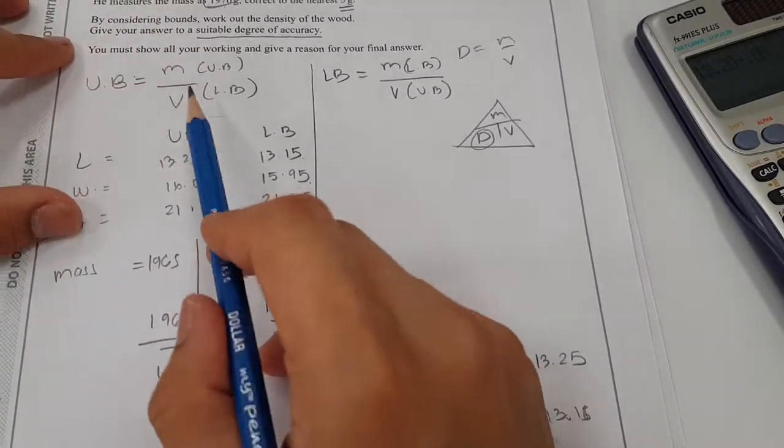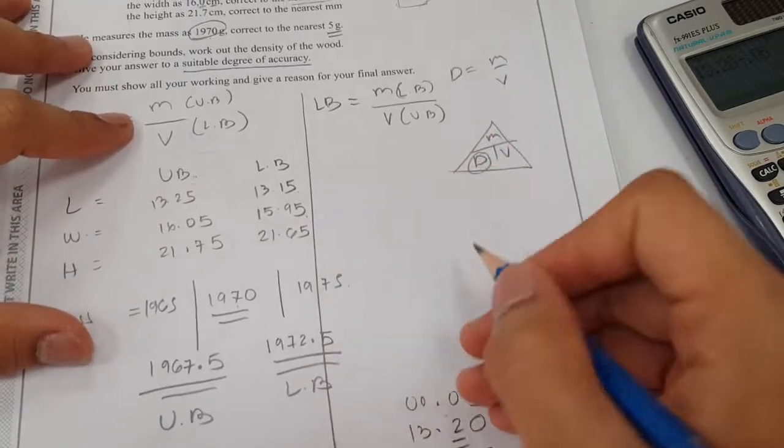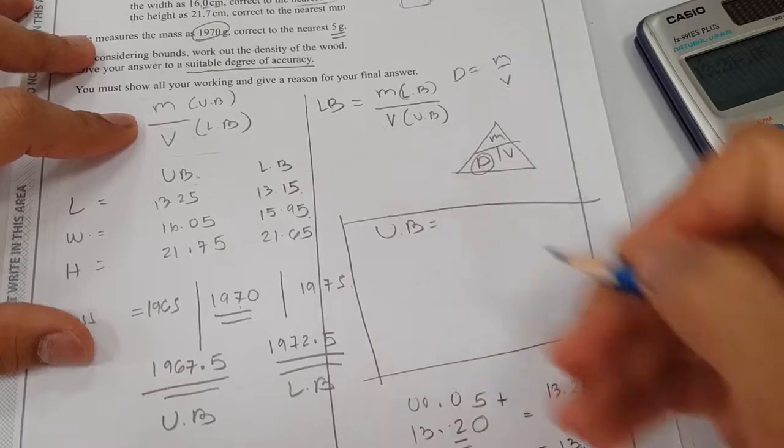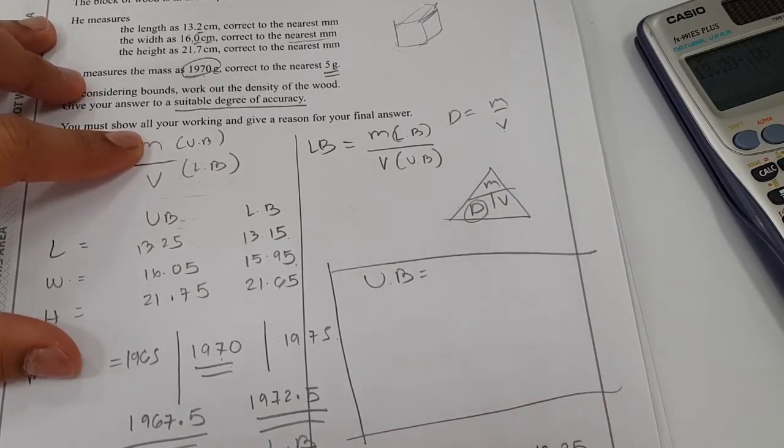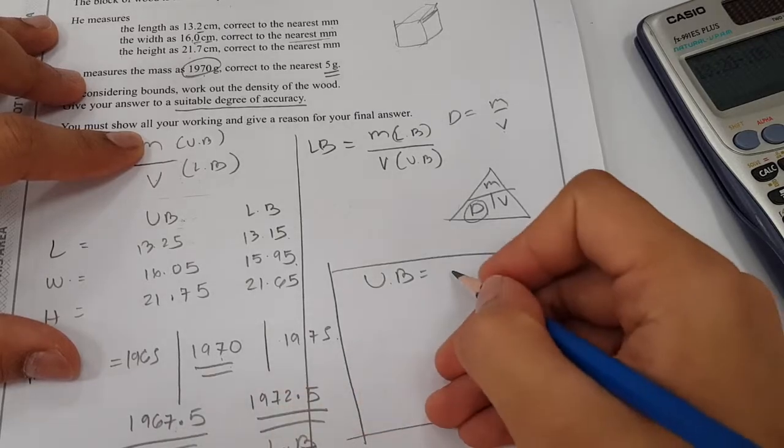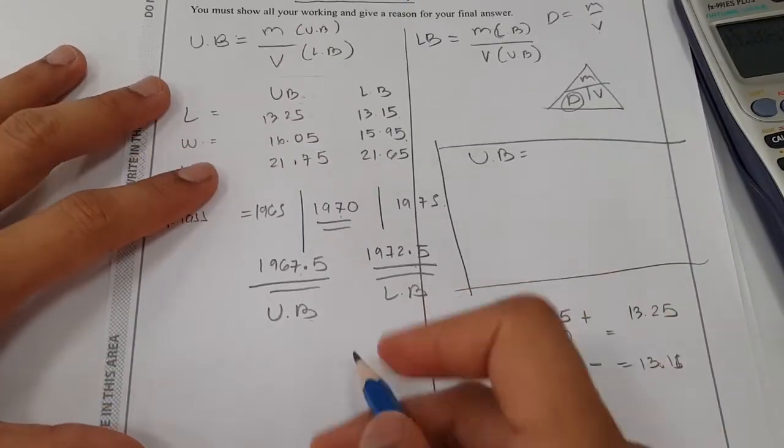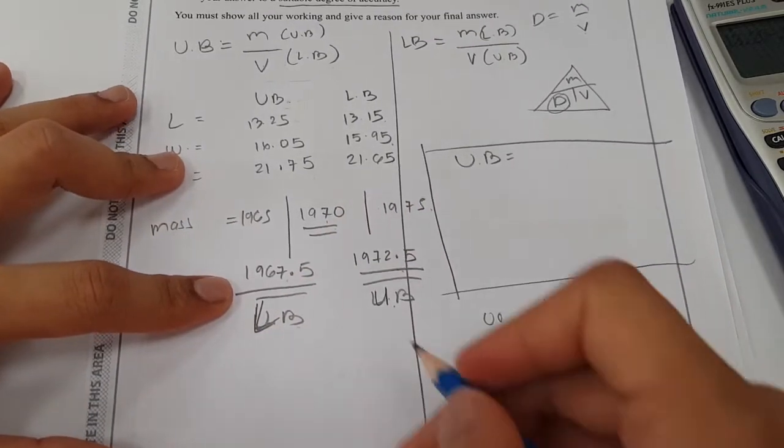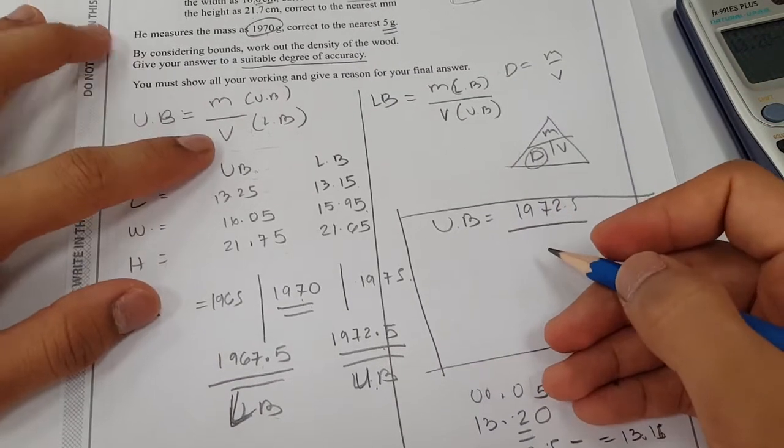Now we just have to find out the upper bound density and the lower bound density. I'll do here the upper bound of the density. For the upper bound of the density, the mass would be upper bound. Here, this would be your upper bound. That would be your lower bound.